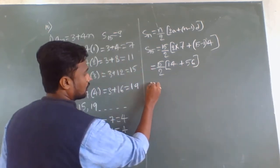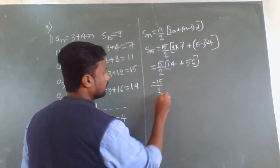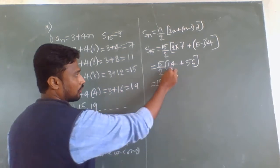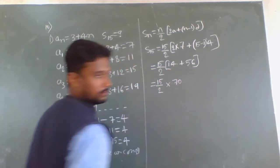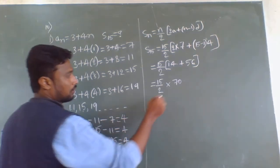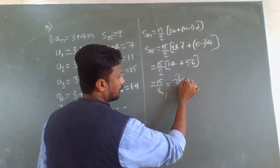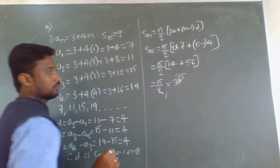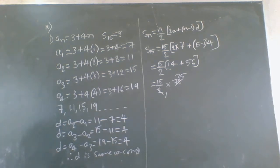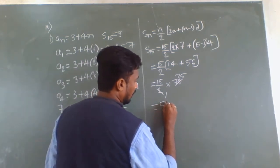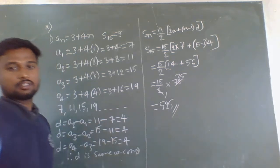Continuing: 14 + 56 = 70. So S15 = 15/2 × 70. Dividing 70 by 2 gives 35. Therefore S15 = 15 × 35 = 525. The sum of the first 15 terms is 525.